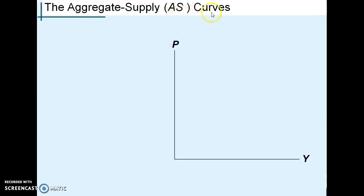We're going to go through the aggregate supply curve now, focusing on the long-run aggregate supply curve. Later on, we'll talk about the short-run aggregate supply curve. The main thing is that the long-run aggregate supply curve reflects the classical model of money neutrality. It's built off the productivity chapter from Chapter 7. The short-run aggregate supply curve is meant to explain when prices cannot perfectly adjust in the short term, and it was really developed during the Great Depression to explain what was going on in the economy in the short run.